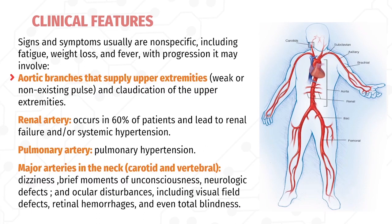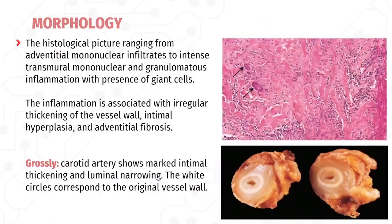Renal artery involvement occurs in about 60 percent of patients, leading to renal failure and/or systemic hypertension. Pulmonary artery involvement leads to pulmonary hypertension. The carotid and vertebral arteries may also be affected, presenting with dizziness, brief loss of consciousness, neurological defects, and ocular disturbances including visual field defects, retinal hemorrhage, and even total blindness.